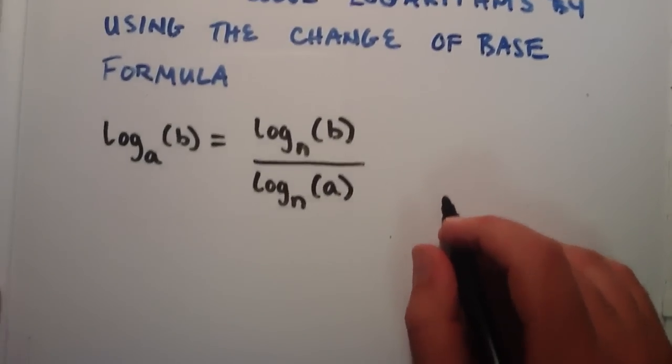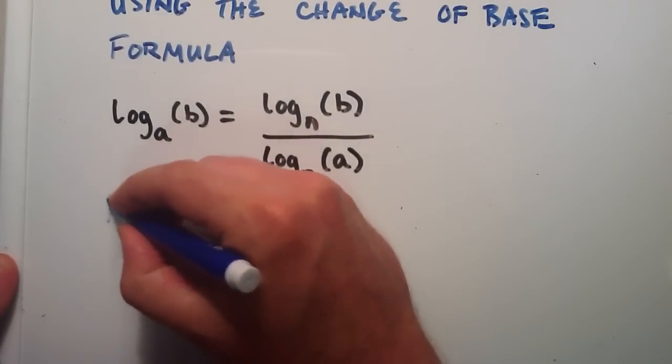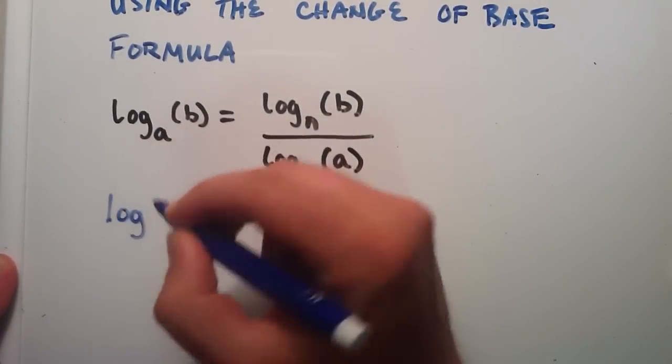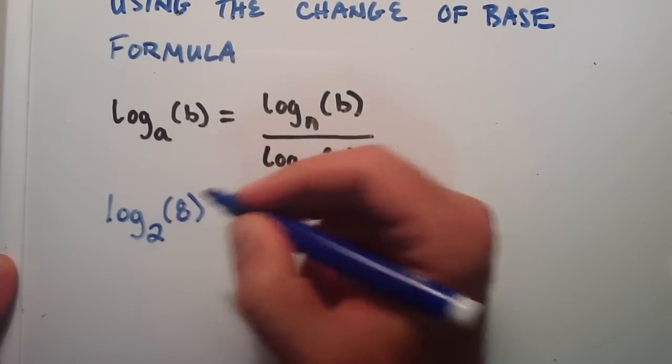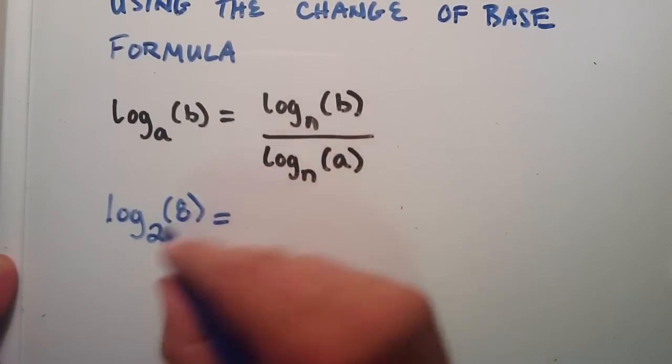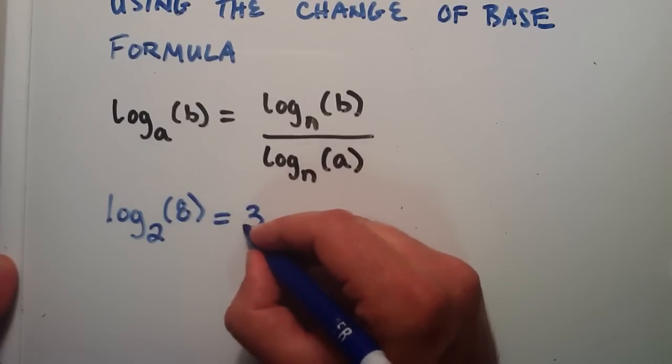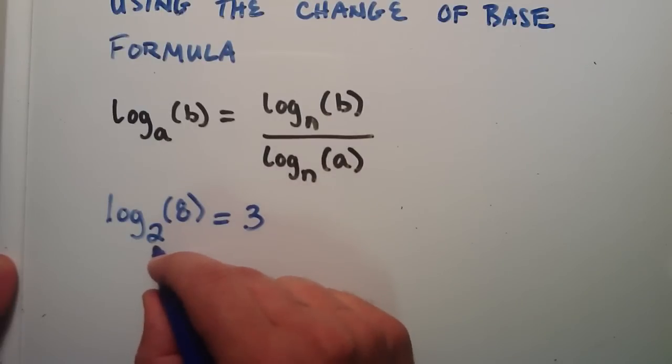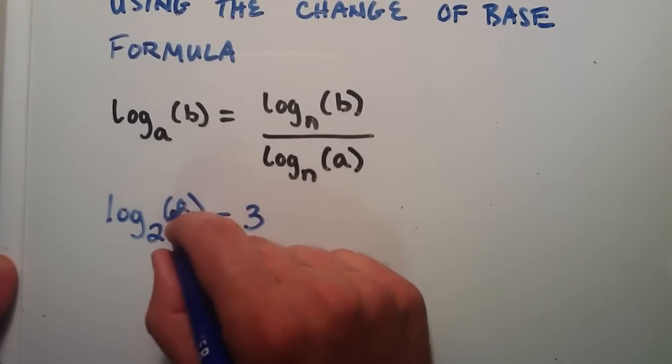So let me give you an example of this. Let's say that we have a logarithm of base 2, argument 8. Well, from my previous examples, if you've watched those, we know that this answer is 3, and the reason that we know that is because 2 raised to the third power is equal to 8.